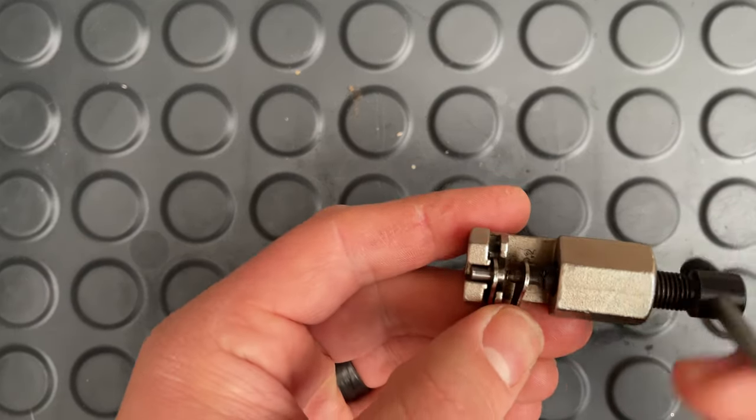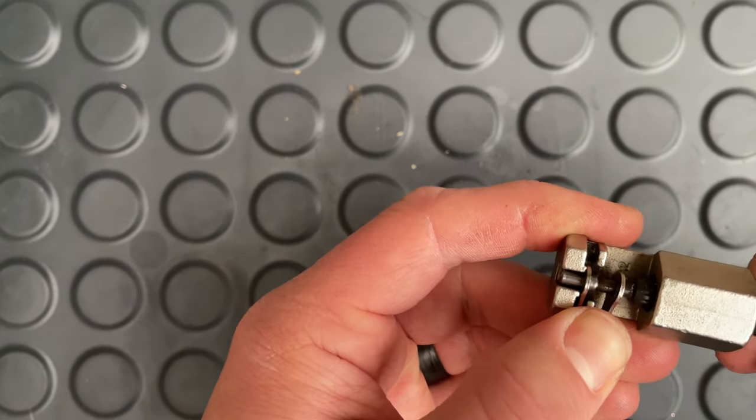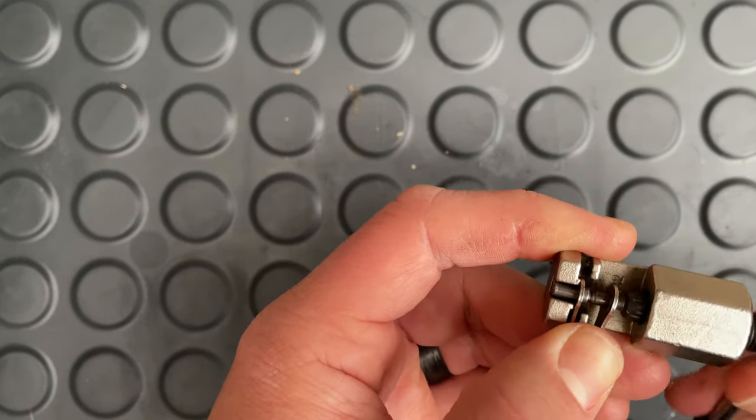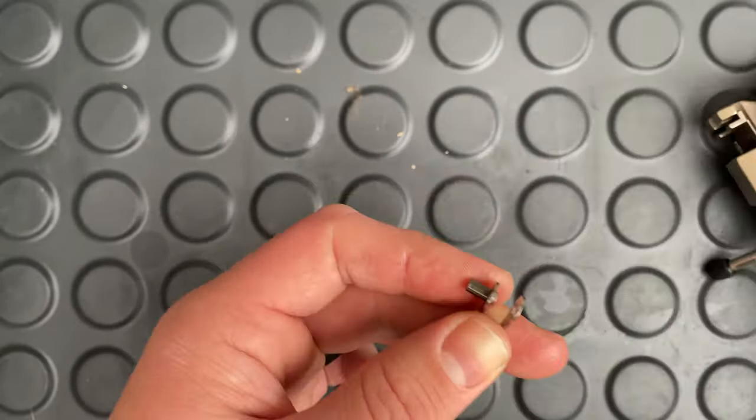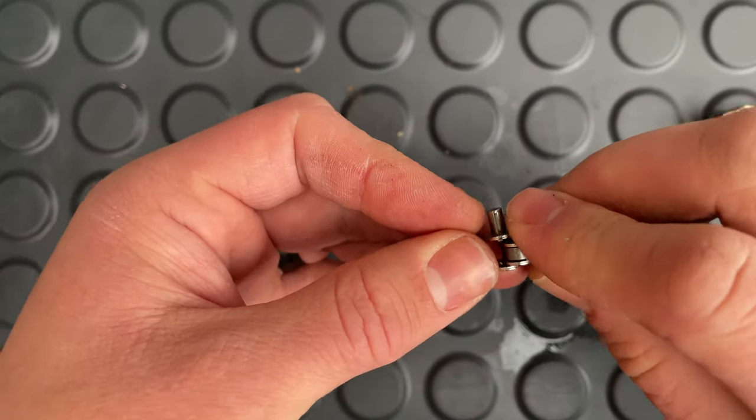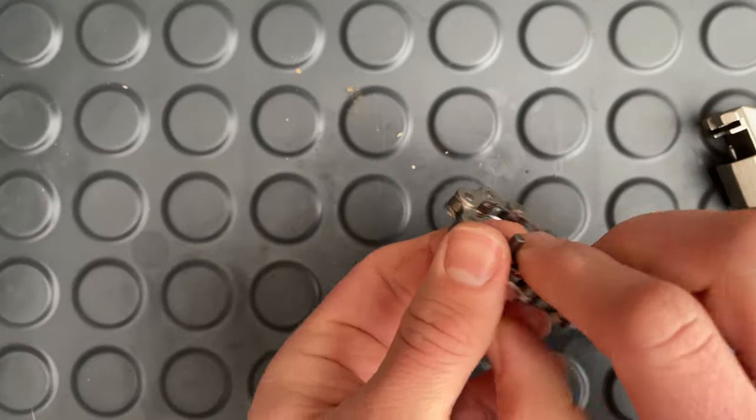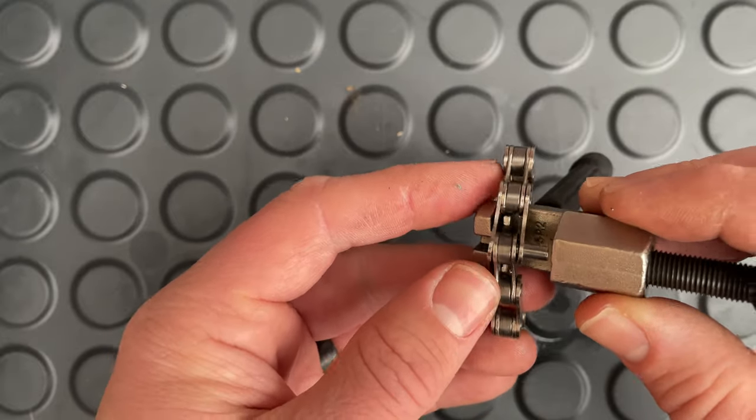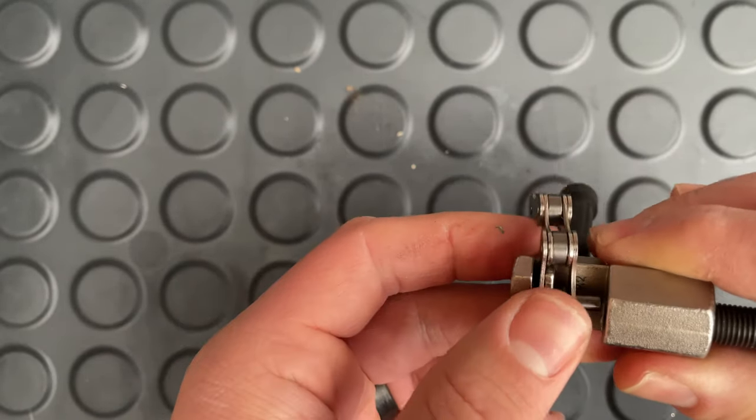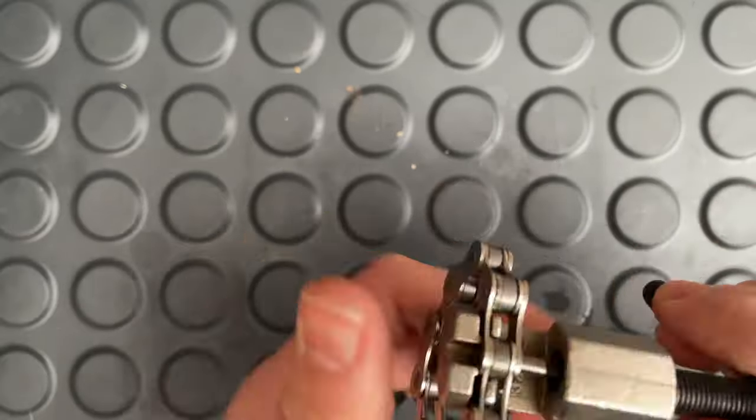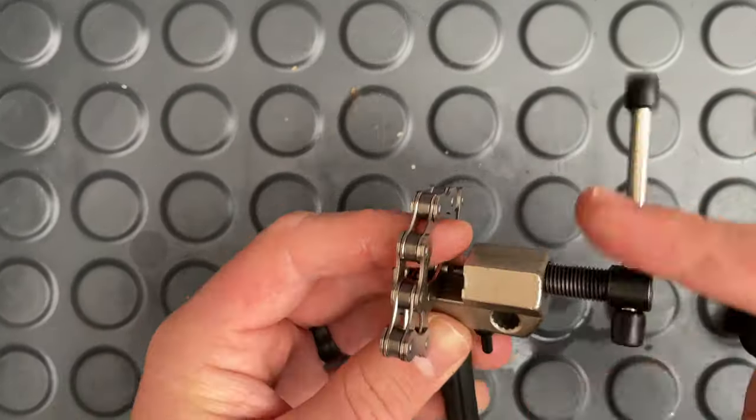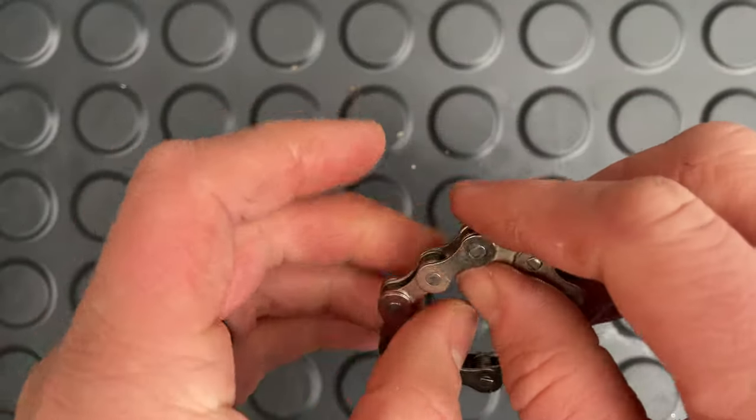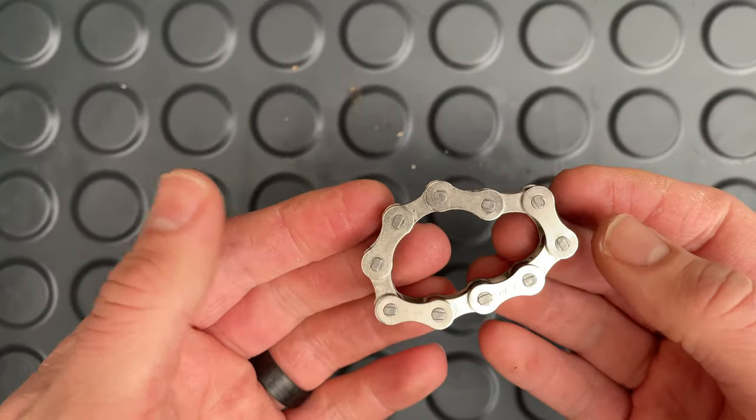Then to make it easy for yourself push the link right up to the edge. Again make sure it doesn't come all the way out because it's difficult to get back in. And there you have it you can then connect it into your circle. And then pop it back into your chain tool and lock it back up. Then once you've done that you should have the smallest of chains.